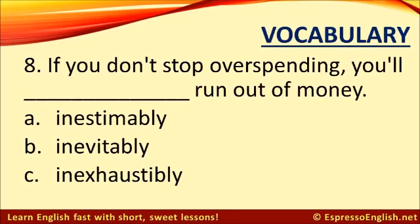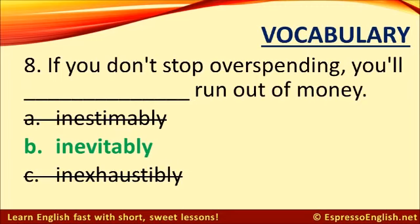Number eight. If you don't stop overspending, you'll... run out of money. A. Inestimably. B. Inevitably. Or C. Inexhaustibly. The correct answer is B. Inevitably. If you don't stop overspending, you'll inevitably run out of money. If something is inevitable, it means it is impossible to avoid — it will definitely happen.